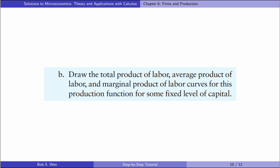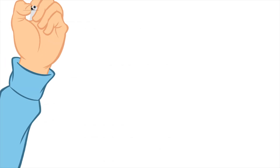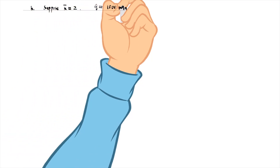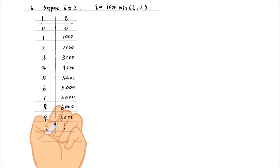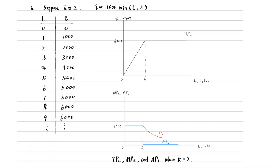In part B, draw the total product of labour, average product of labour, and marginal product of labour curves for this production function for some fixed level of capital. Suppose capital is fixed at 2 units. We list the quantities of output as labour increases. According to the table, we draw the total product of labour curve when capital is fixed at 2: it is an upward-sloping straight line up to 6 units of labour, and then becomes a horizontal line. The corresponding marginal product of labour is the slope of the total product curve.